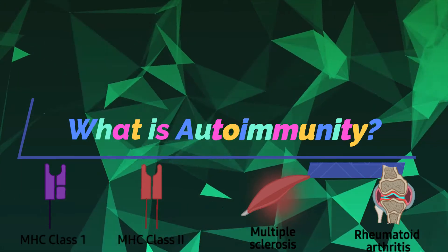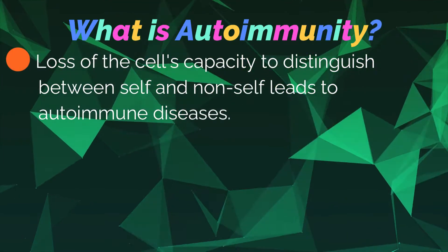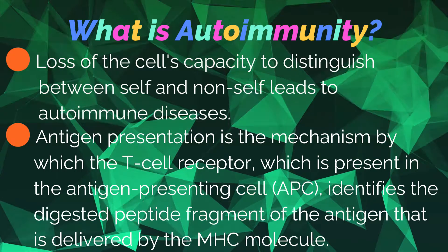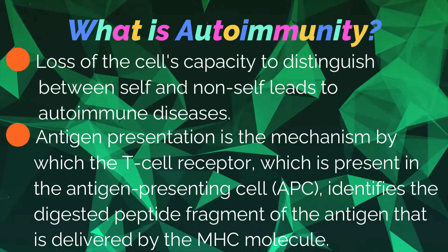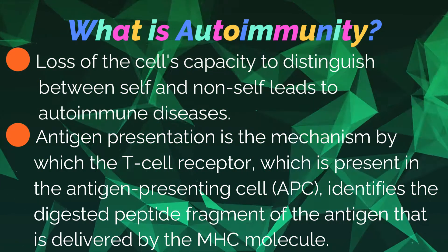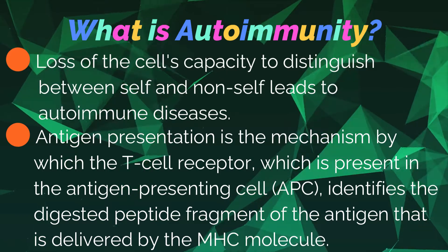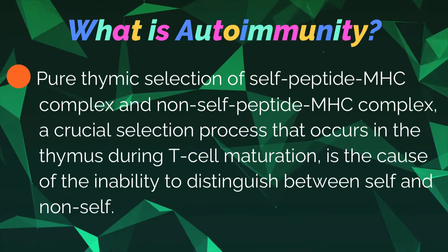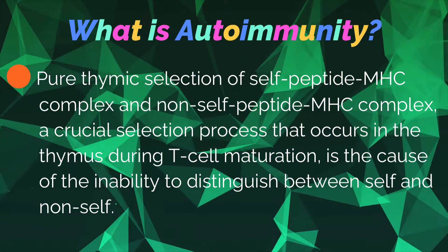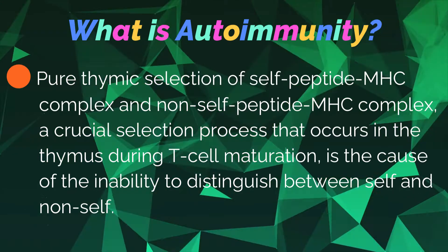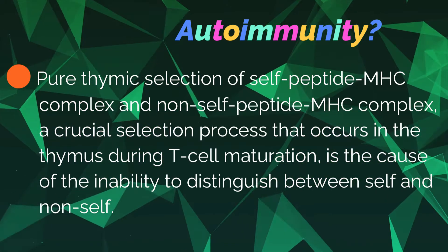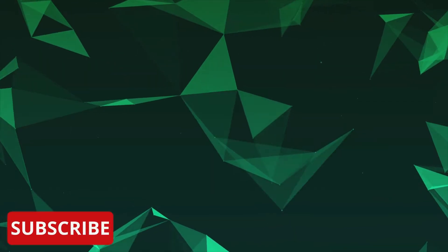What is autoimmunity? Loss of the cell's capacity to distinguish between self and non-self leads to autoimmune diseases. Antigen presentation is the mechanism by which the T cell receptor, present in the antigen-presenting cells, identifies the digested peptide fragments of the antigen delivered by the MHC molecule. Faulty thymic selection of self-peptide MHC complexes versus non-self-peptide MHC complexes — a crucial selection process occurring in the thymus during T cell maturation — is the cause of the inability to distinguish between self and non-self.